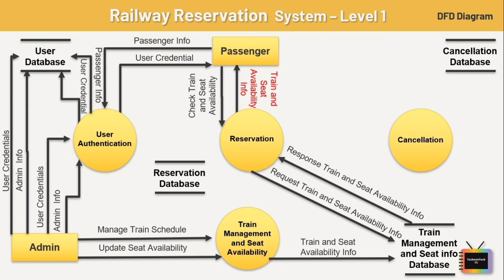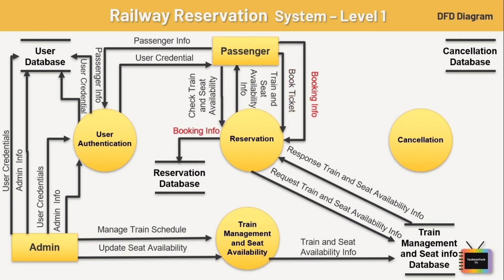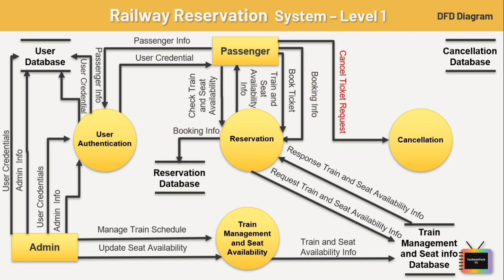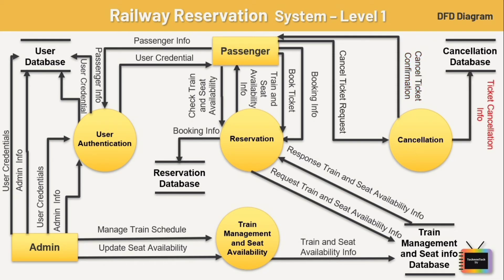After checking train and seat availability, the passenger books tickets. All booking information is shared with the reservation process and stored in the reservation database. If the passenger wants to cancel tickets, that request is sent to the cancellation process. The cancellation process sends confirmation to the passenger, and the ticket cancellation record is stored in the cancellation database. This completes our level 1 DFD diagram.